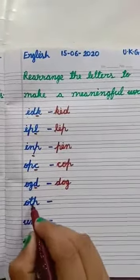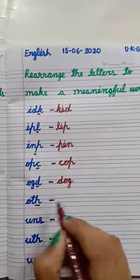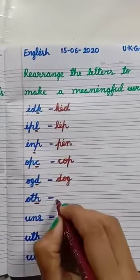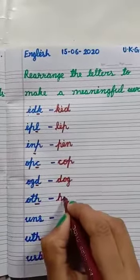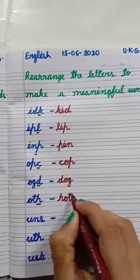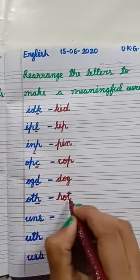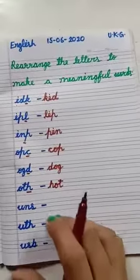Then the letters are O, T, H. First, I have written H, then O, then T. H, O, T — Hot. Hot is a meaningful word.